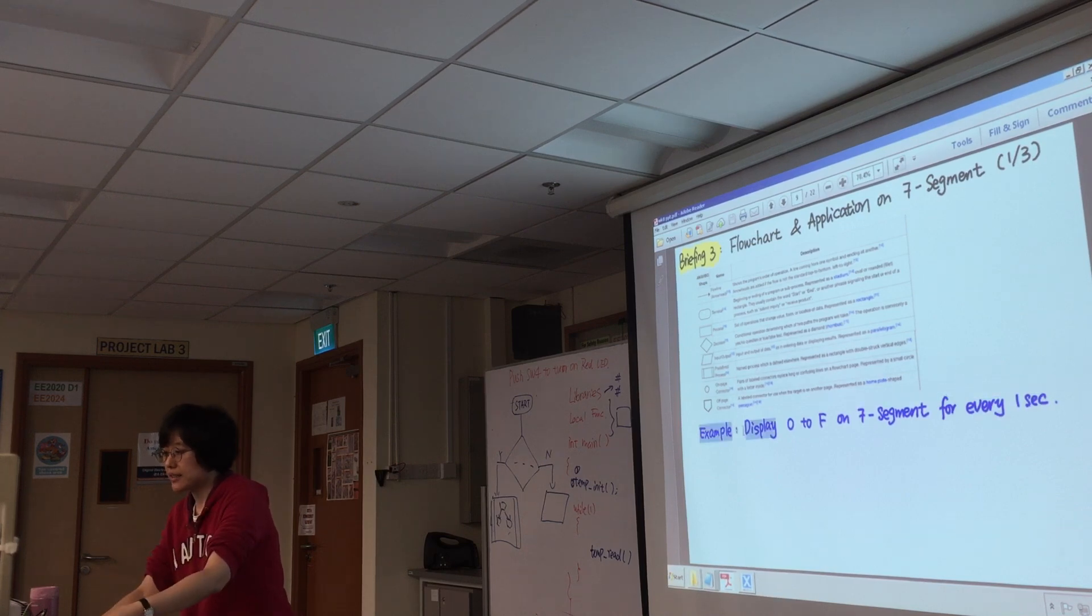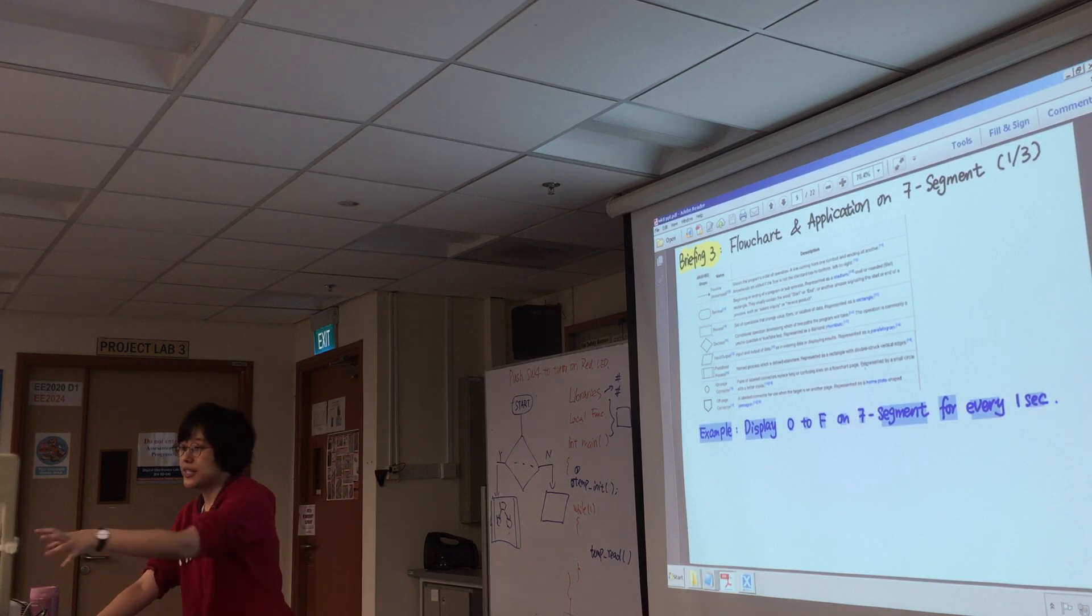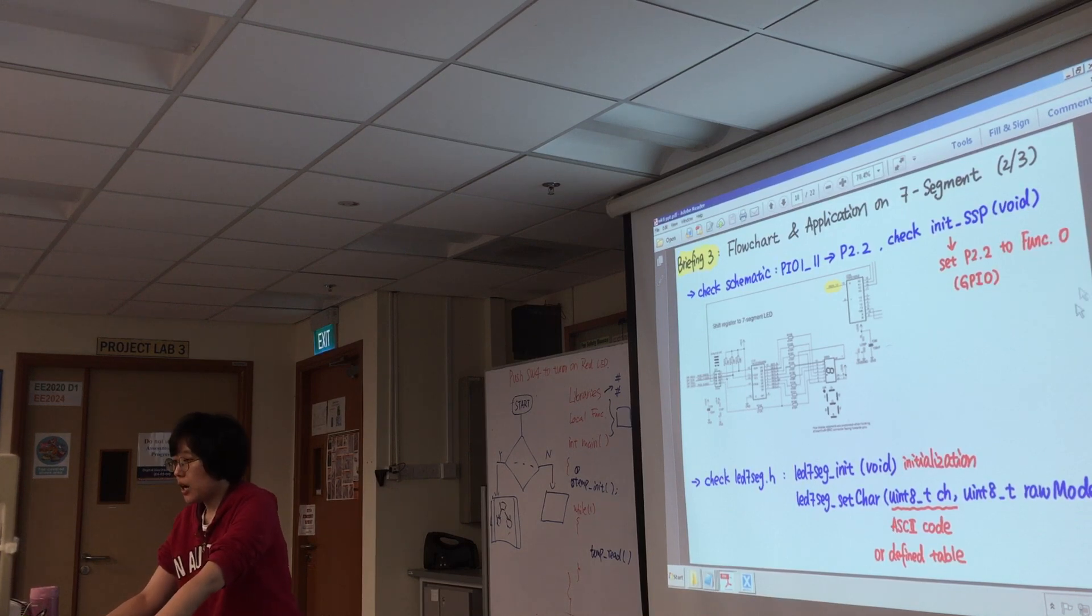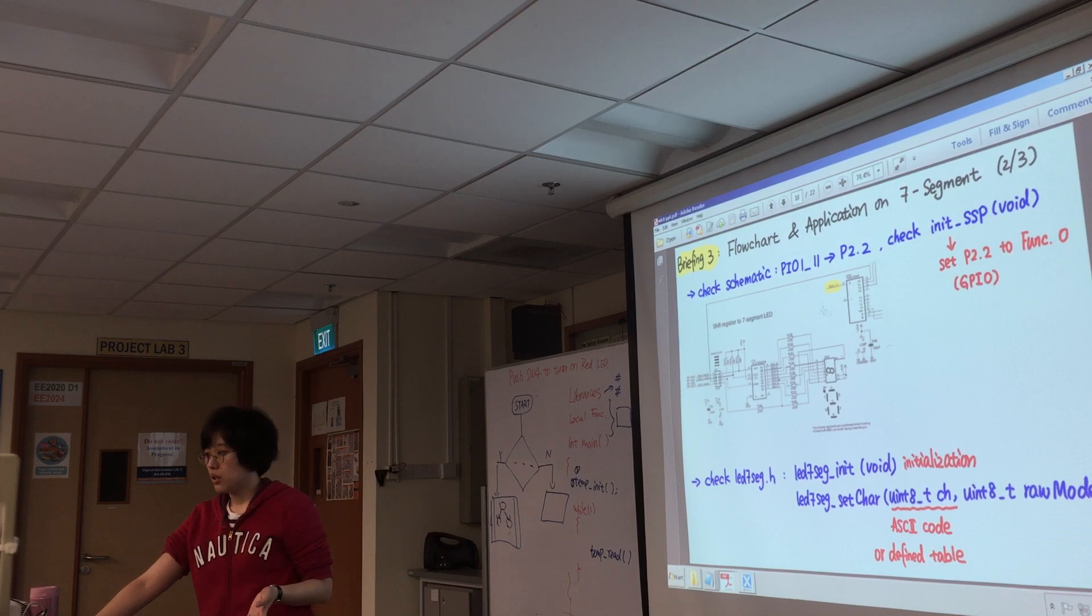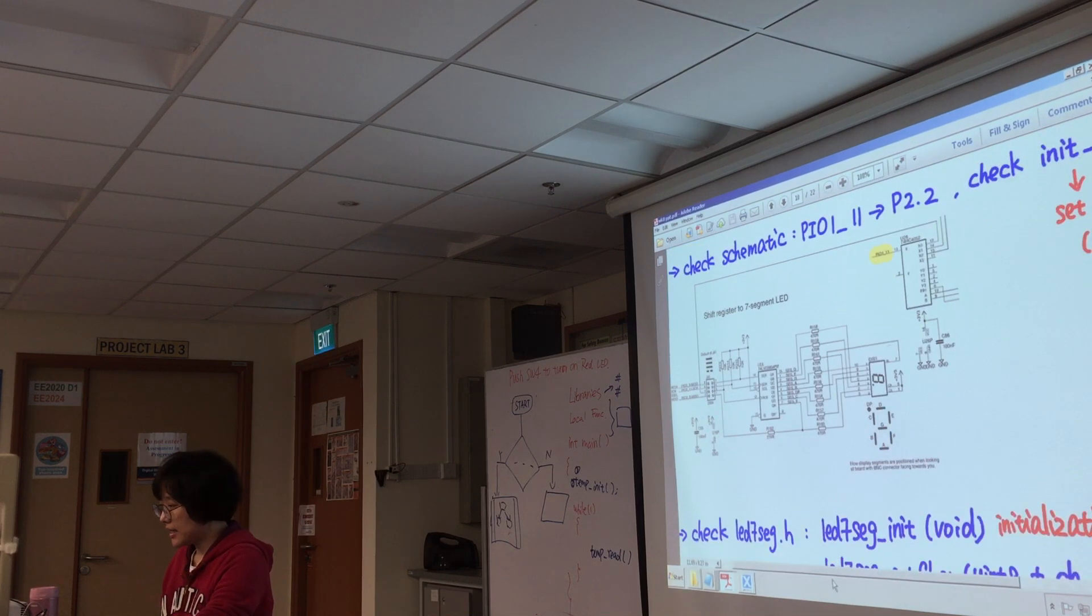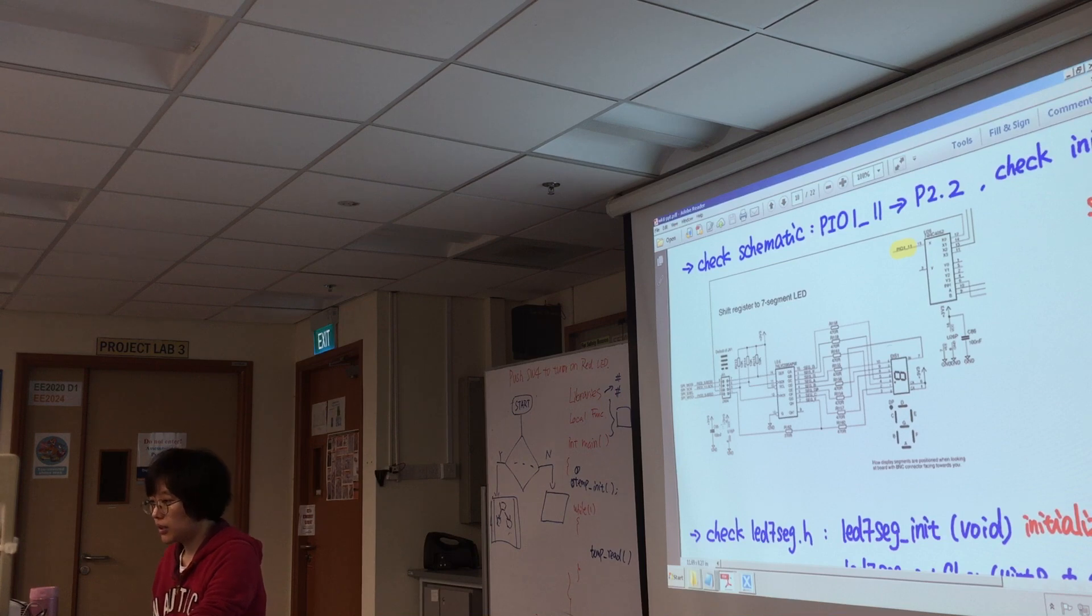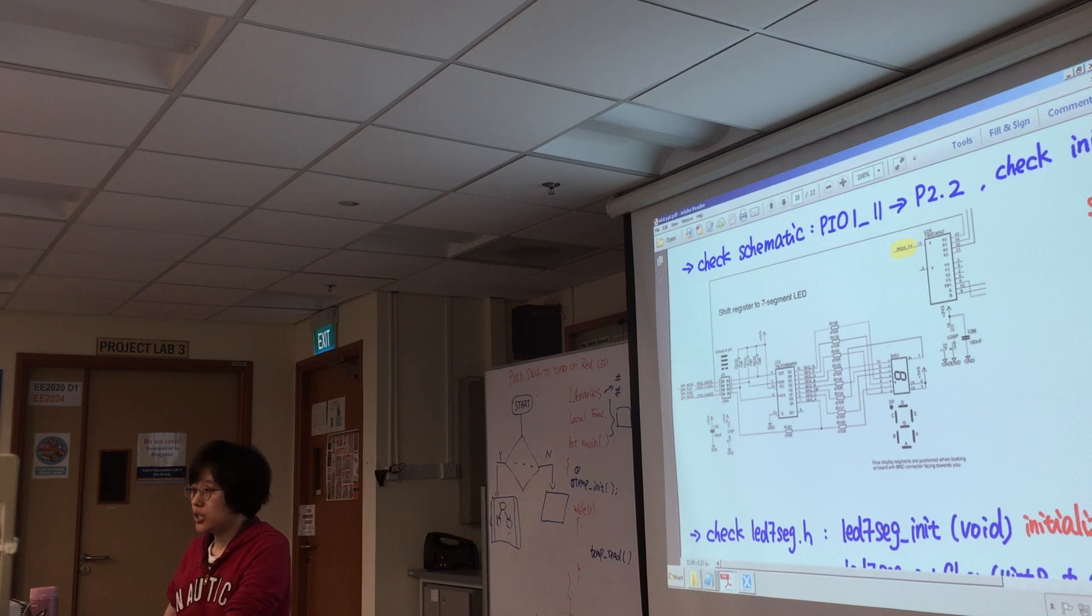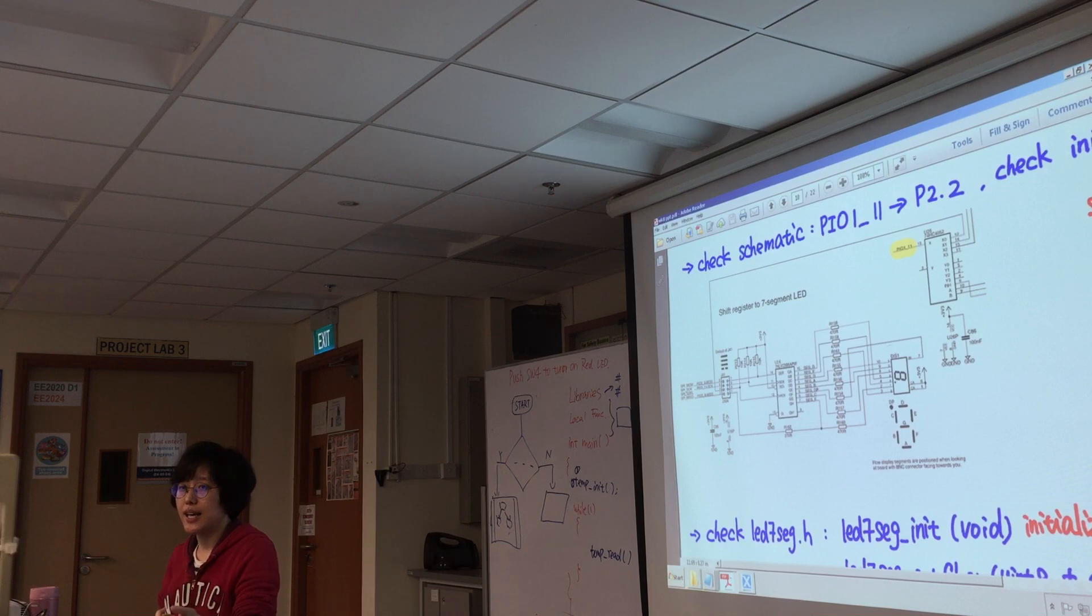So to achieve this, I want to draw a flowchart. For example, this is my mini project. So this is how the seven segments work. So if you check your schematic, this is the schematic of seven segments. And here are some pins to control the seven segments. So just as temperature sensor and what else? So just as those initializations, these pins will be initialized by the given function.